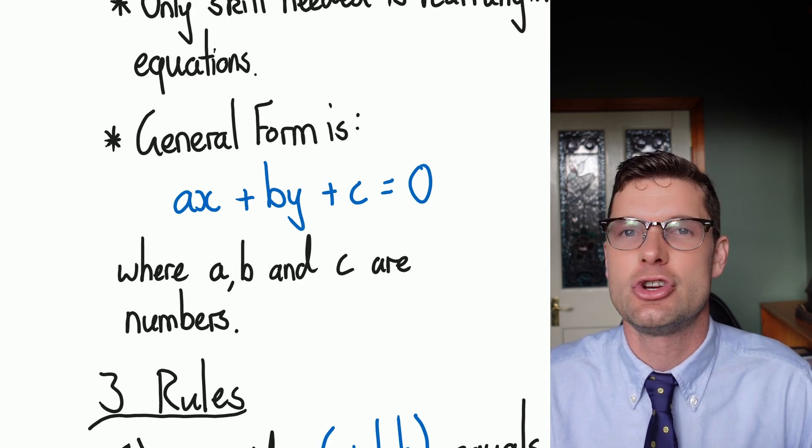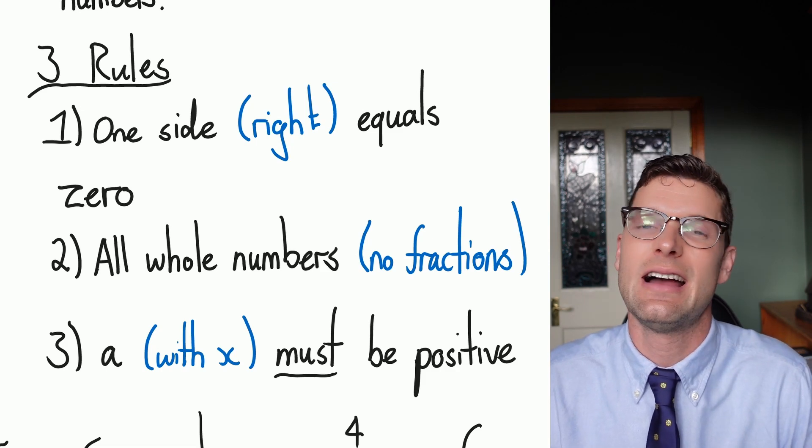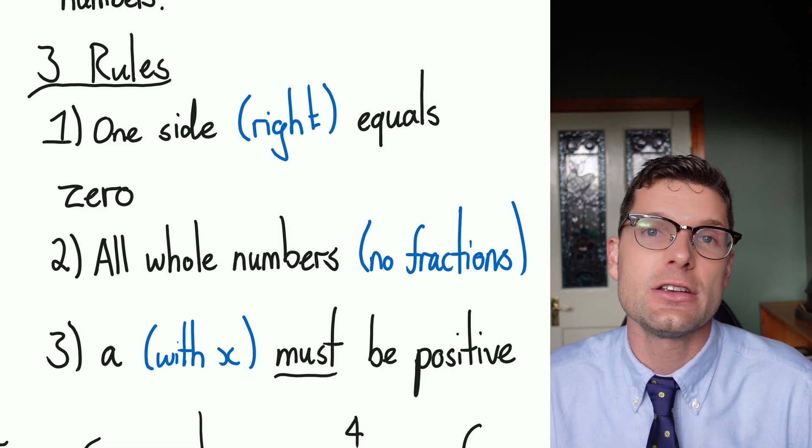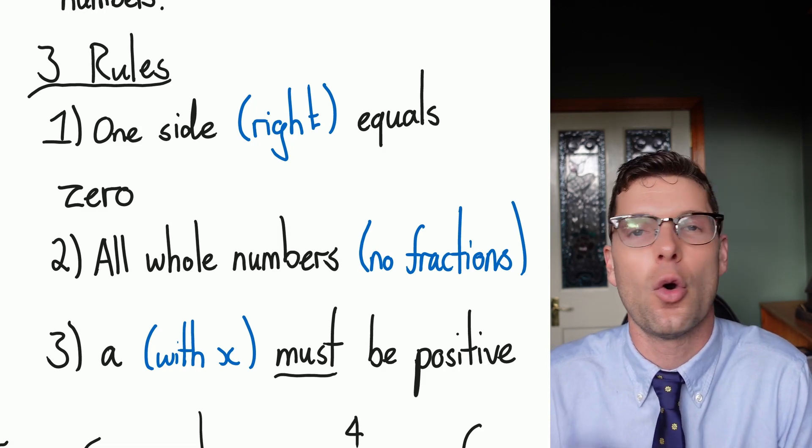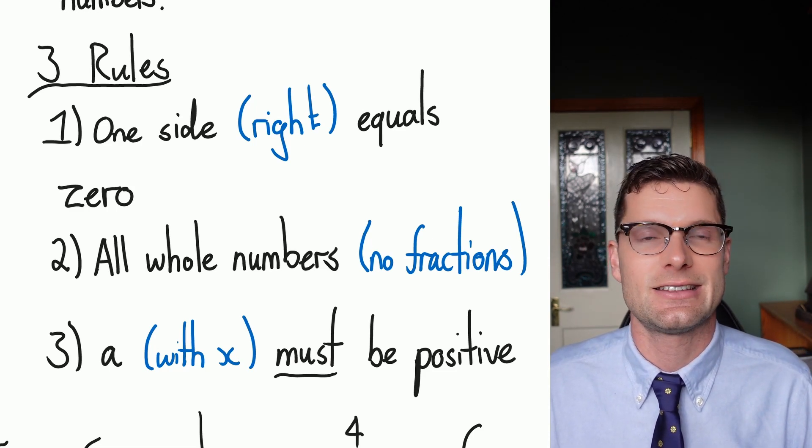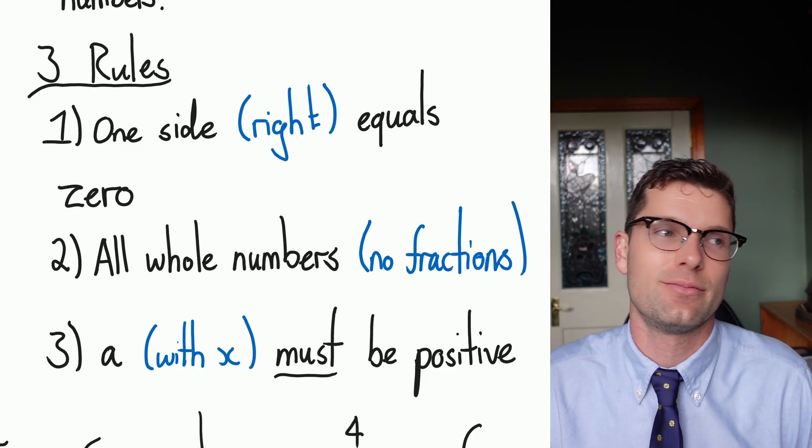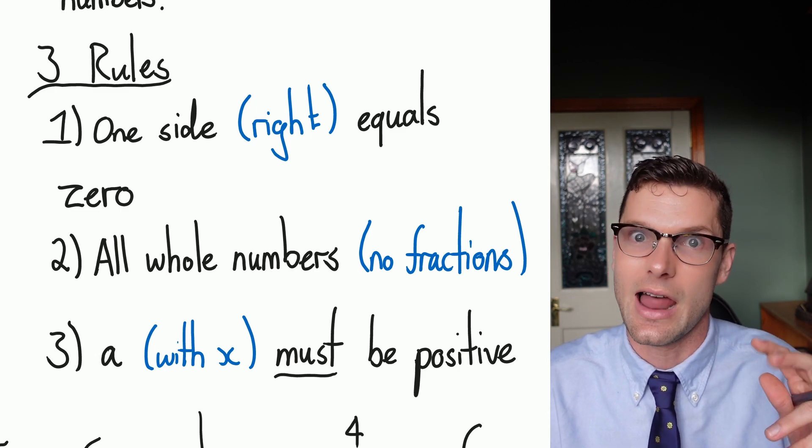There are three golden rules that come from having this general rule. And if you knock out all three, you're always going to get it right. The first thing is that one of the sides, usually the right-hand side, is always going to be equal to zero. So if you don't have a zero in your final answer, you know you've got it incorrect. So this is a nice starting point because you just have to vacate all of the information from one side to leave it with nothing.